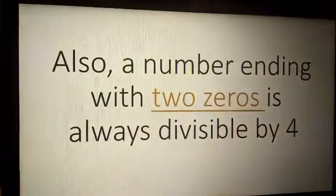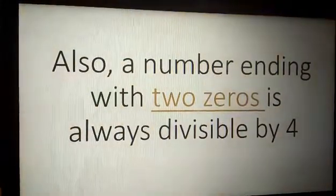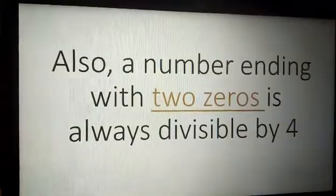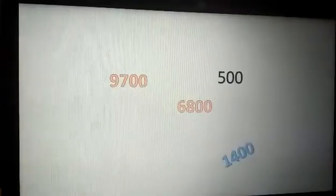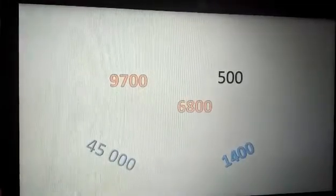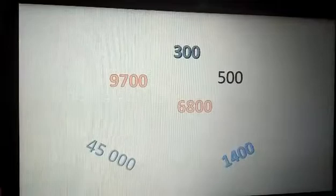Also, a number ending with two zeros is always divisible by 4. Like 6,800, 500, 9,700, 1,400, 45,000, and 300.